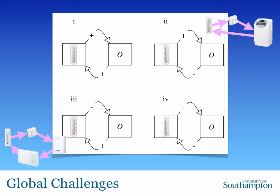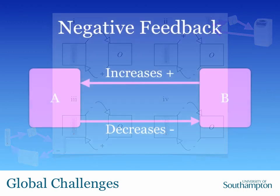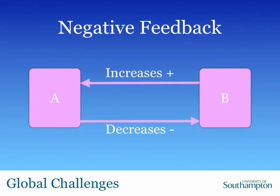So you've got something which increases something which then decreases it, or something which decreases something which then increases it. This is an example of a negative feedback system — sometimes called just negative feedback, sometimes a negative feedback loop. The word 'loop' is an important addition because there has to be some kind of process by which one system affects another, which affects another, and then it comes back to affect itself. There's a causal loop.